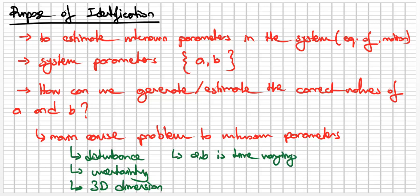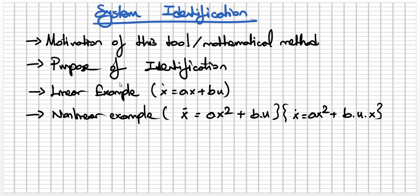However, in the state space representation, A and B are treated as time-invariant — that is, equal to constant values throughout time. So how can we obtain or derive the A and B values in this case? This is the purpose of this study.